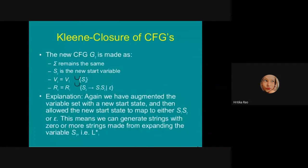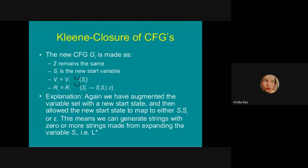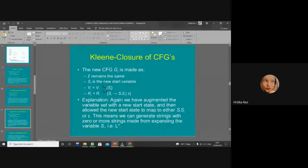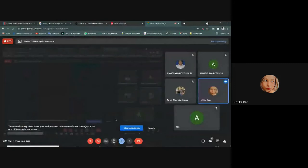The Kleene closure of CFGs: the new CFG G_Z is constructed so that sigma remains the same, S_Z is the new start variable, V_Z equals V1 union {S_Z}, and R_Z equals R1 union the rules S_Z → S1 S_Z | epsilon. We have augmented the variable set with a new start state, as done in earlier slides.